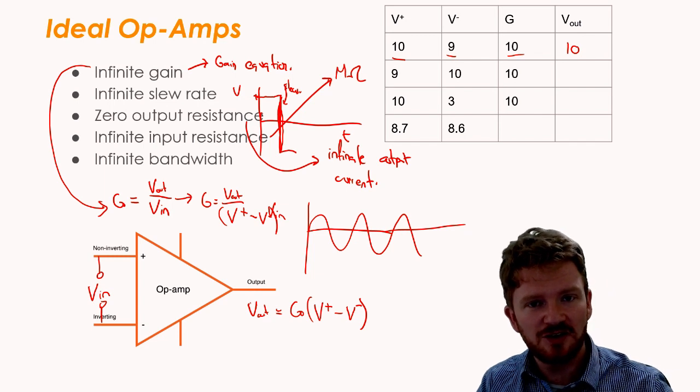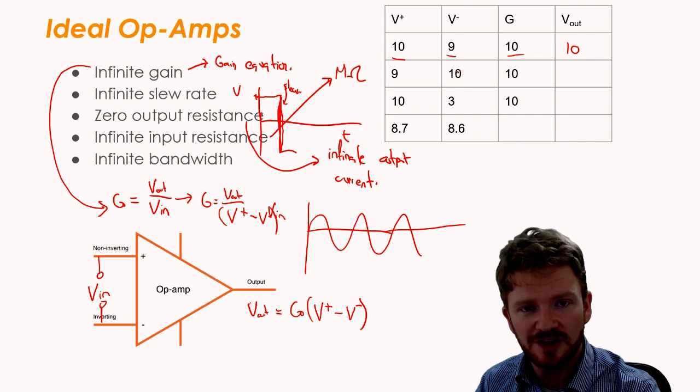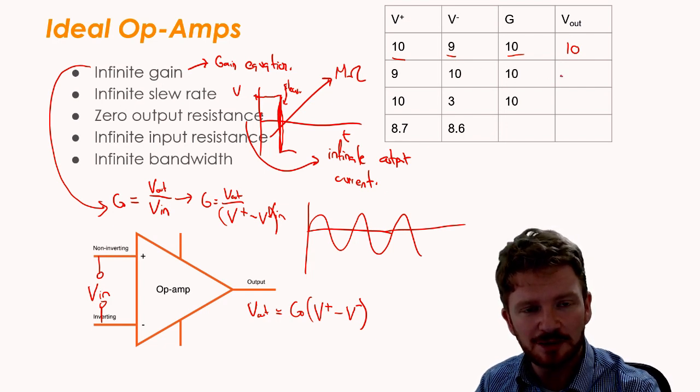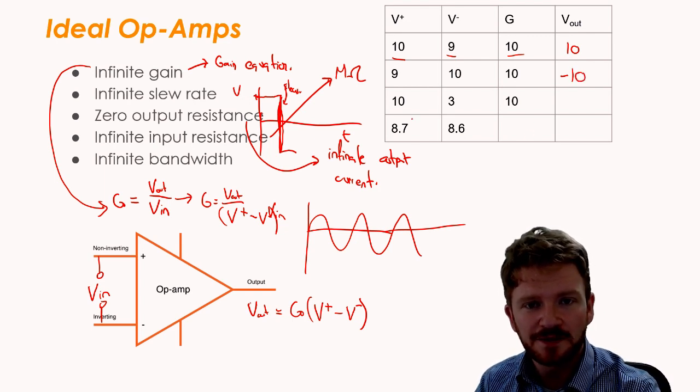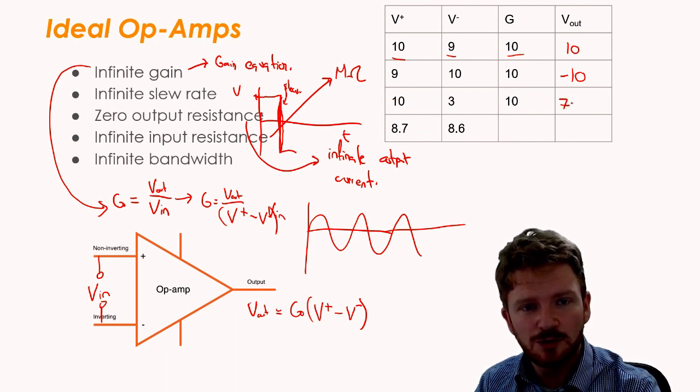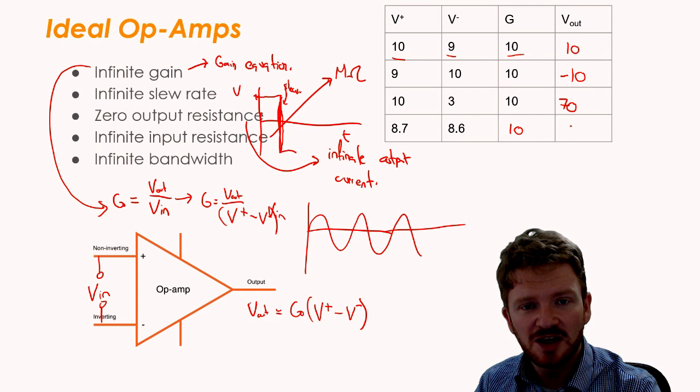For the second case, I've now made the non-inverting input smaller than the inverting input. If you come down to this equation, V+ take away V- is now minus 1. Minus 1 times 10 gives me minus 10 as my output. Here, 10 take away 3, that gives me 7, times 10 will be 70 volts. And then here, 8.7 take away 8.6, that gives me 0.1, times 10, just by 10 again for ease, will give me 1 as my output.